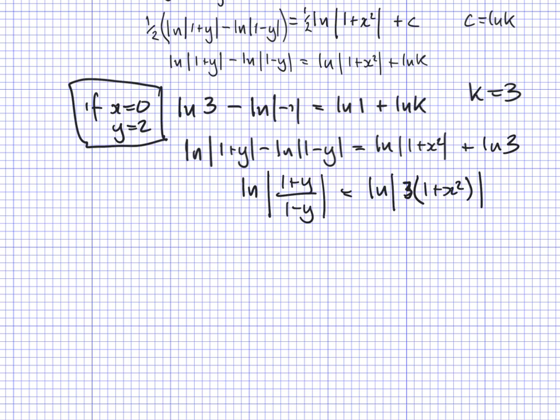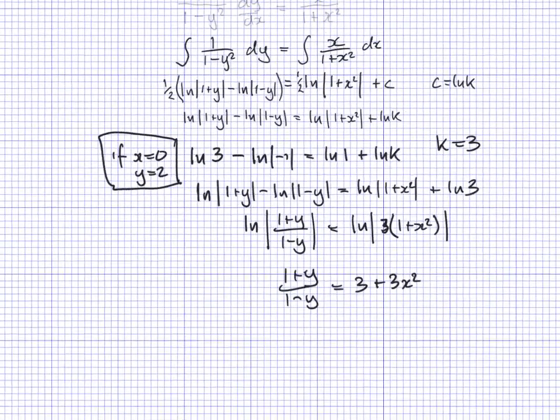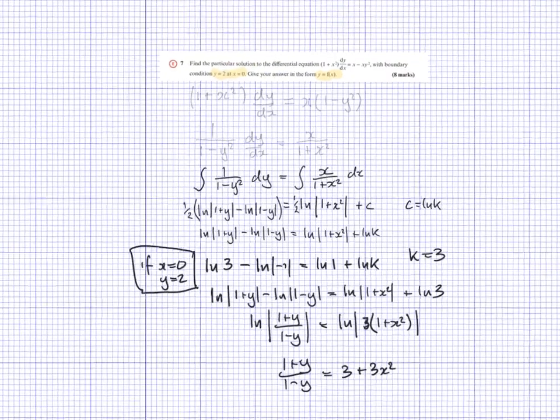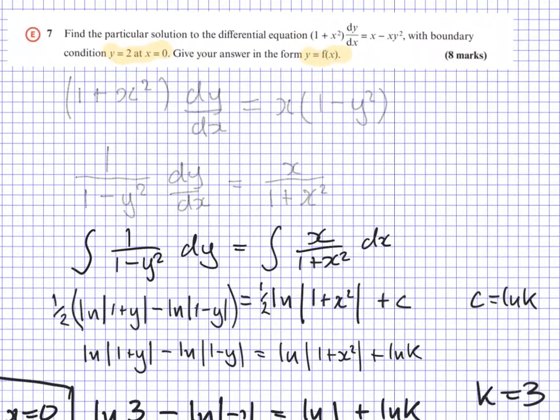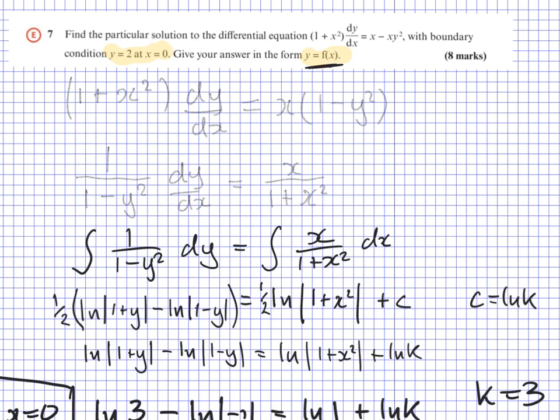And now we get 1 plus y over 1 minus y equals 3 times 1 plus x squared. As you can see, I've expanded the brackets at that stage. Now we need to rewrite this so it says y equals, given in the early part of the question, we had to give the answer in the specific form shown, y equals some function. So there's still algebra to do.